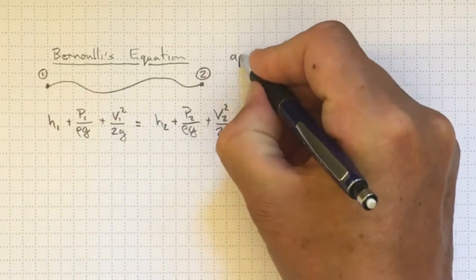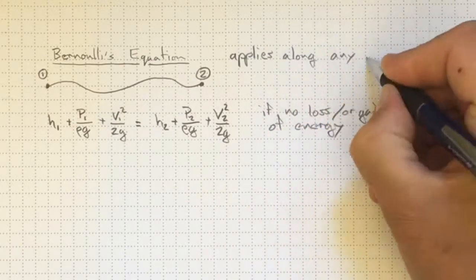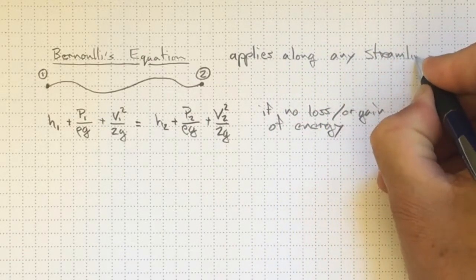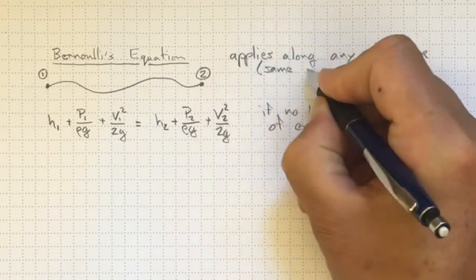Bernoulli's equation applies along any streamline, and a streamline is the same as a path line in steady flow.